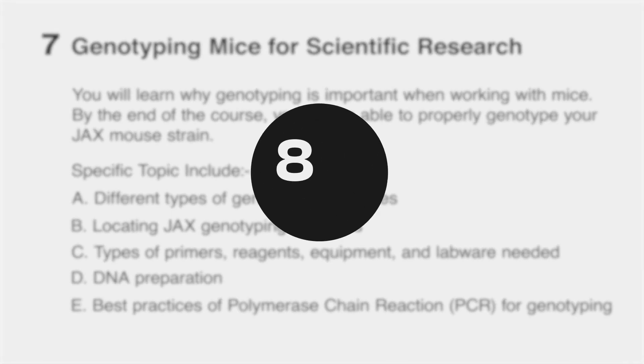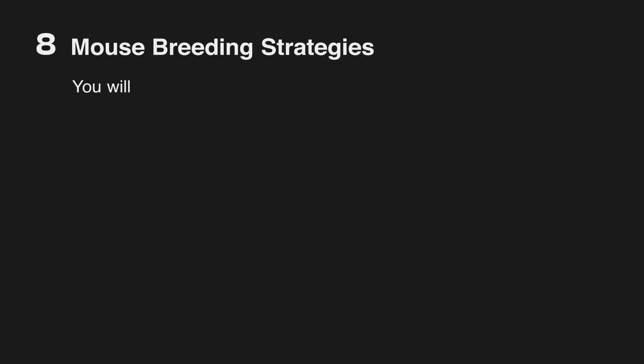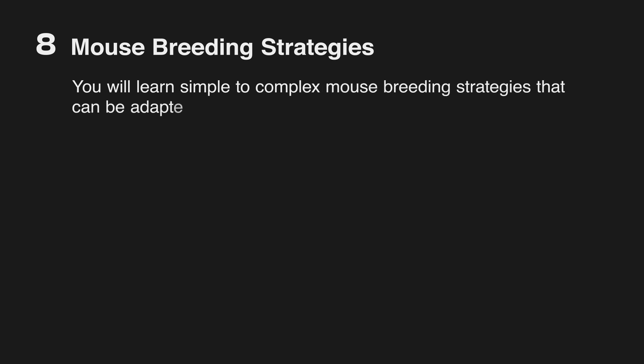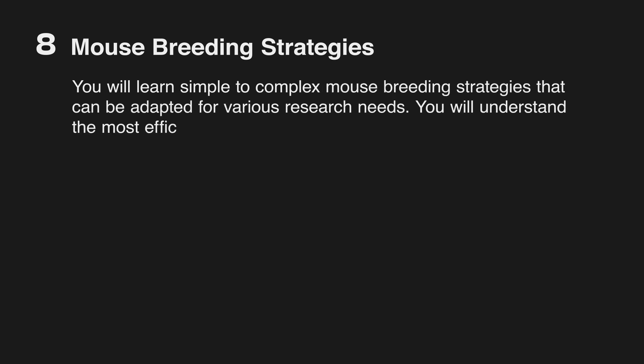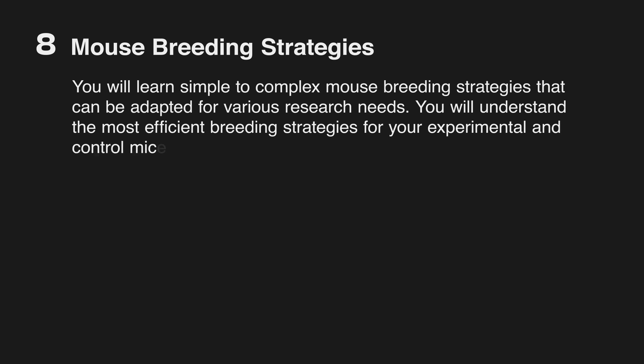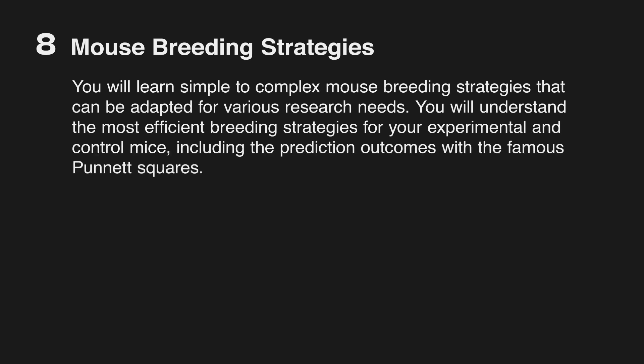Number eight: mouse breeding strategies. In this course, you will learn simple to complex mouse breeding strategies that can be adapted for various research needs. You will understand the most efficient breeding strategies for your experimental and control mice, including how to predict outcomes with the famous Punnett squares.